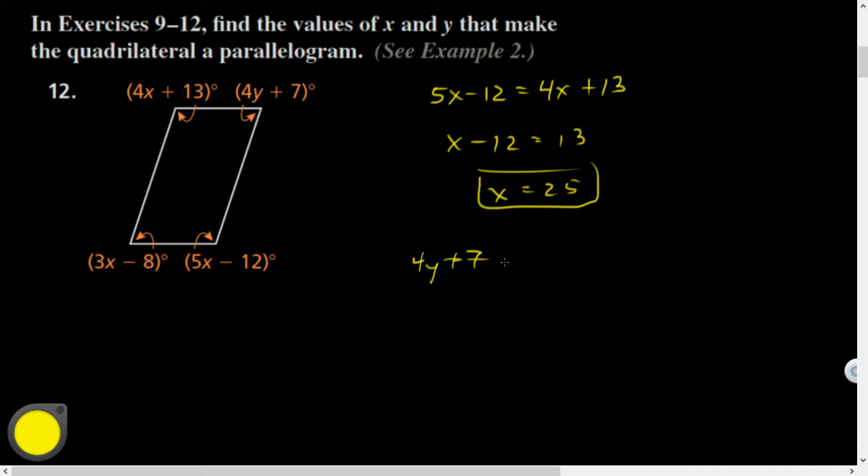4y plus 7. Yeah, minus 8. So 4y plus, I'll leave that here for now. So that's 75 minus 8, that's what, 67, so that means 4y is equal to 60, y is equal to 15. Nice!